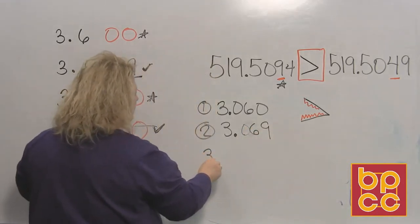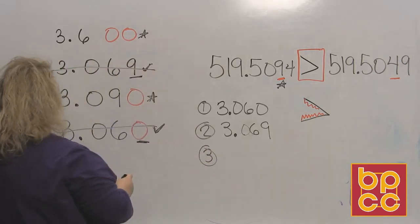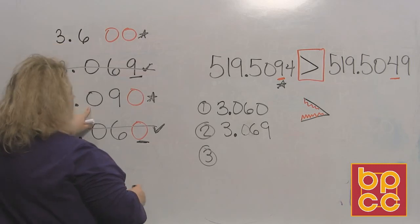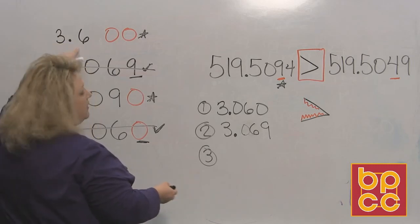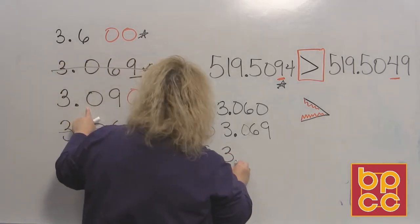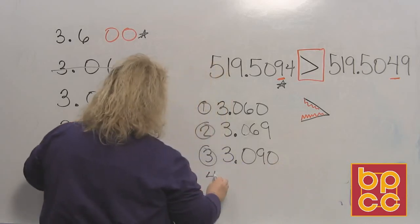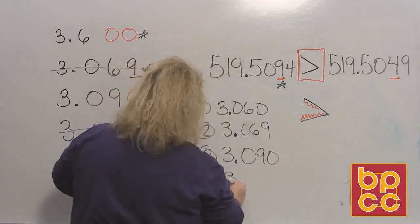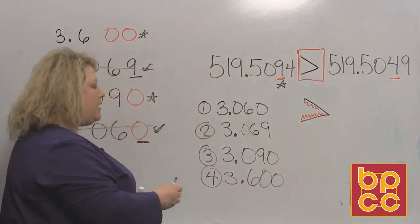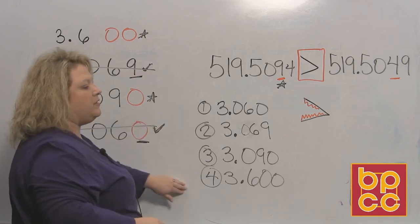We've used that one. Next we compare the last two we have. We have a six up here at the top in the tenths place and a zero. Well, we know that zero is a lot smaller than six, so this one must be the third one. And then the last number is going to be 3.6. So that is how you compare numbers and put them in order from the smallest to the largest.